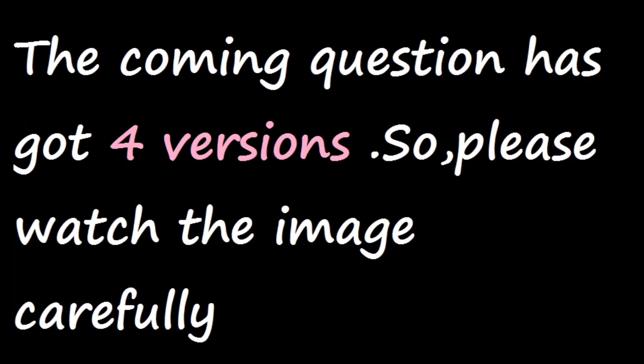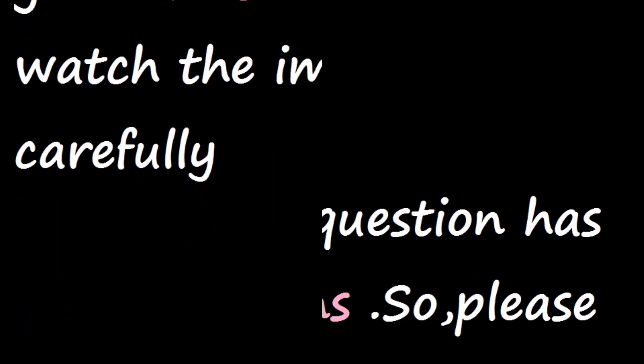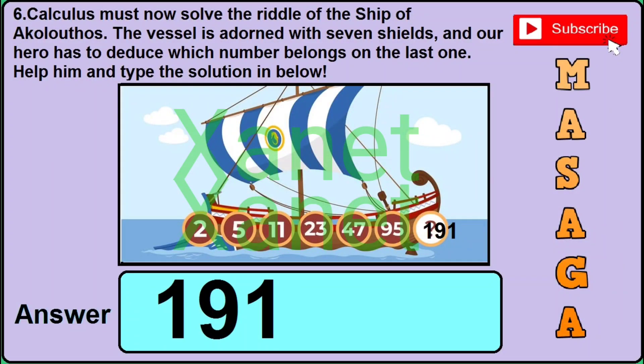Question number 6 has got 4 different versions or types, so you need to watch the image carefully and see each number with proper attention and care. For example, in version 1, the numbers written in the image are 2, 5, 11, 23, 47, 95, and question mark. Then the correct answer would be 191, so just type 191 for this question.